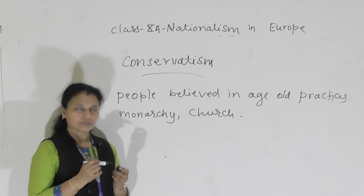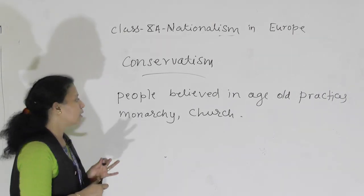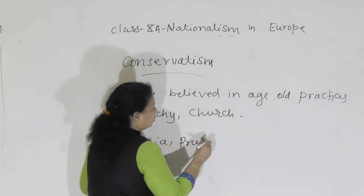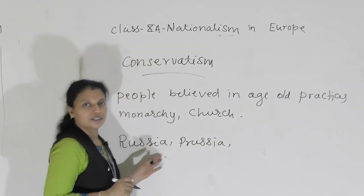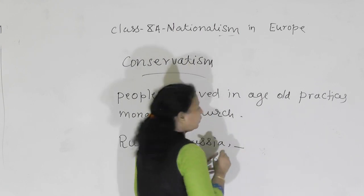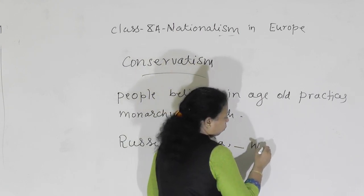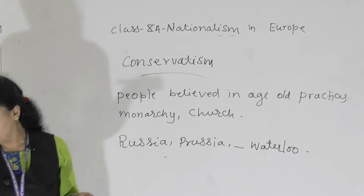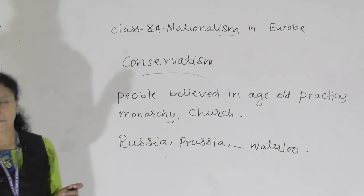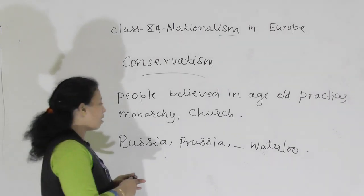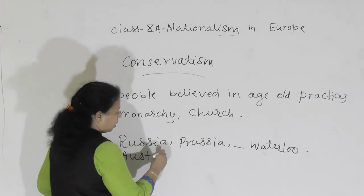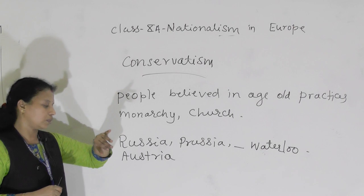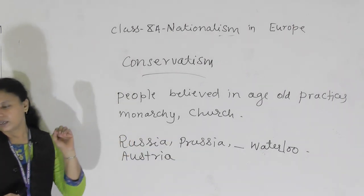These conservatives together — for example, the conservatives of Poland, Russia, and Prussia — had defeated Napoleon in the Battle of Waterloo. Napoleon was defeated. Countries like Russia, Prussia, and Austria had collectively defeated Napoleon because they came to know his drawbacks.